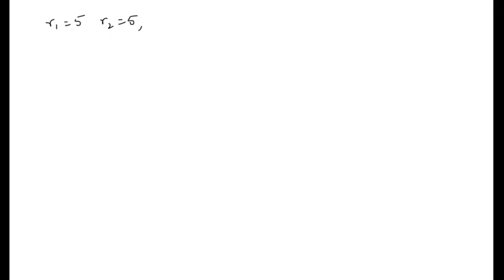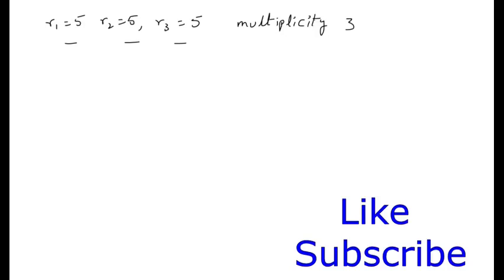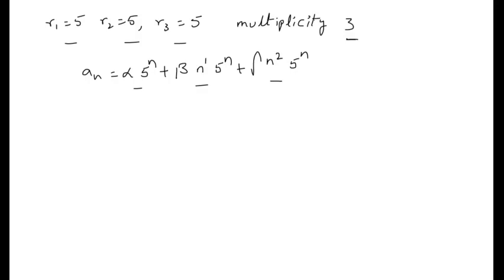We will now see how to solve when roots are the same but with different multiplicities. Suppose r₁ = r₂ = r₃ = 5, so all roots are the same and multiplicity is 3. In that case the solution is aₙ = α·5ⁿ + β·n·5ⁿ + γ·n²·5ⁿ, taking n⁰, n¹, and n² terms.